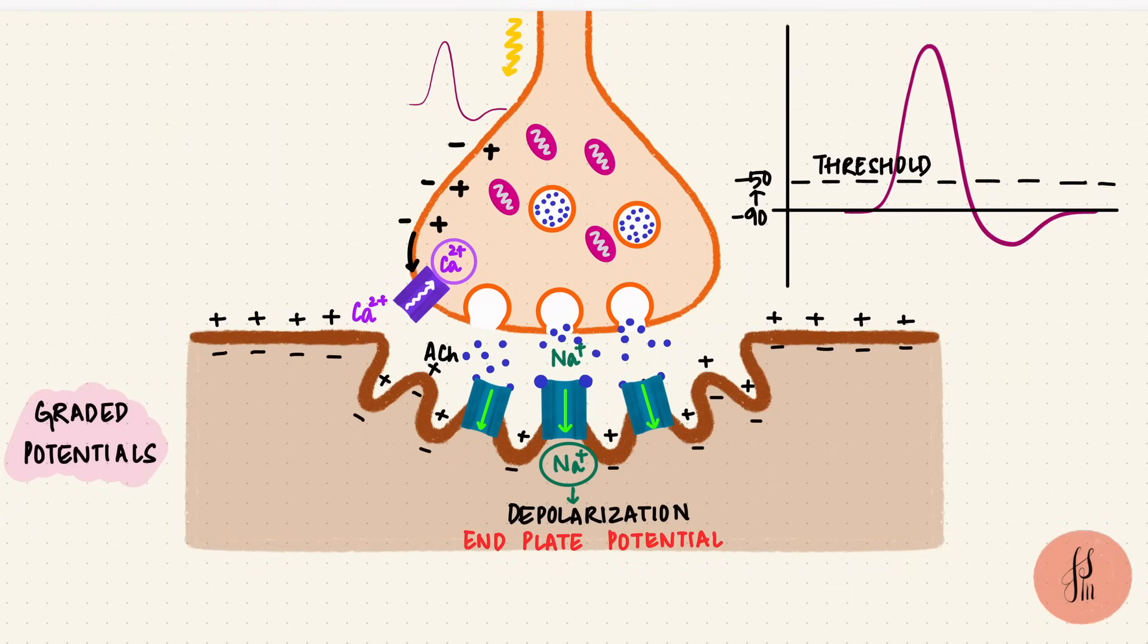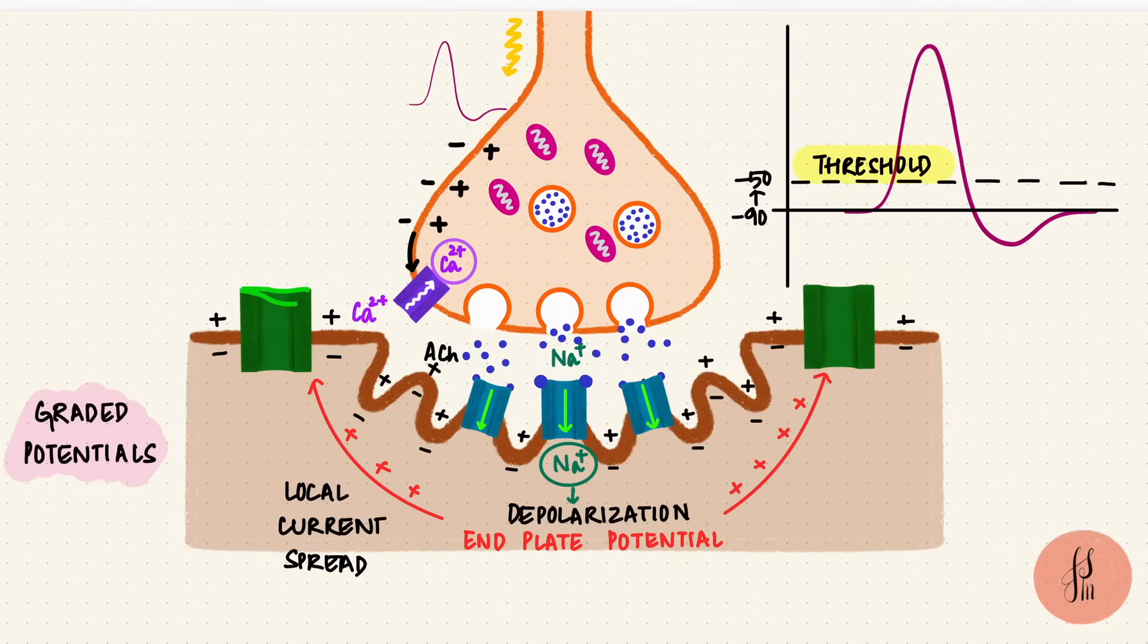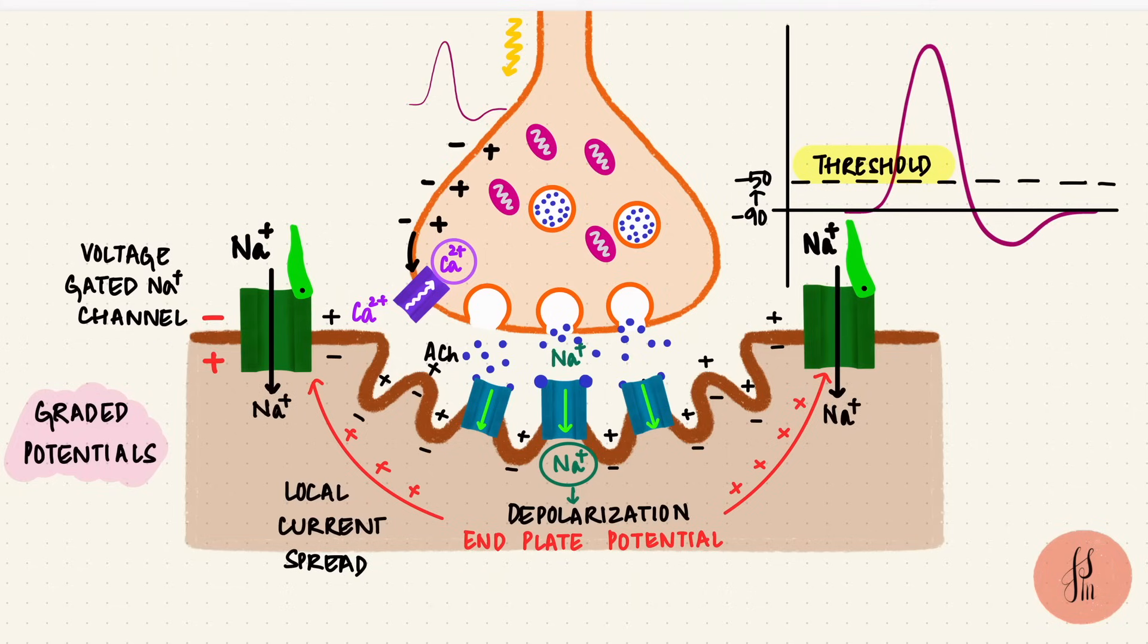This potential leads to local current spreading, and when the membrane potential reaches threshold, that opens the voltage-gated sodium channels, causing sodium ions to rush into the cell. There's depolarization and an action potential on the muscle membrane.